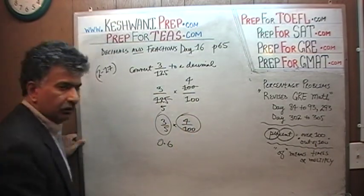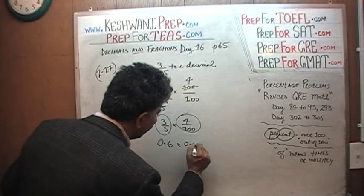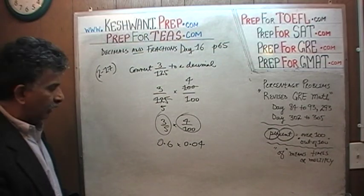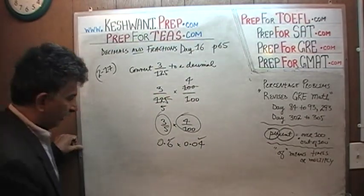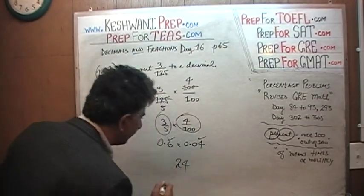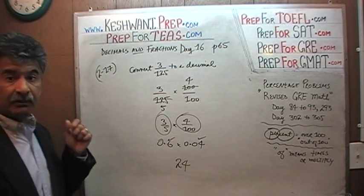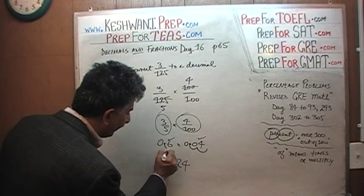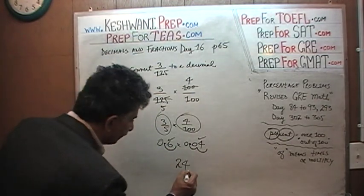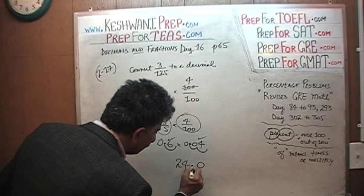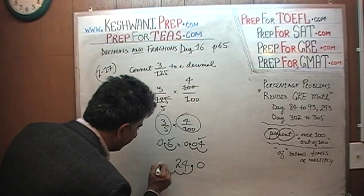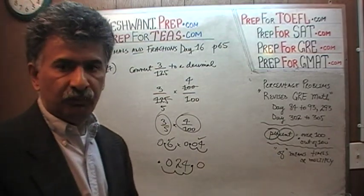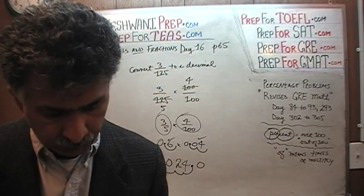How much is 4 over 100? That's just 0.04. Now all we have to do is multiply 0.6 times 0.04. How much is 6 times 4? That's 24. Now we take care of the decimal places. 0.04 has 2 decimal places, and 0.6 has 1 decimal place — so we move the decimal point 3 places total. We get 0.024. That is our answer. Don't turn it into a freak show like the book does with long division.